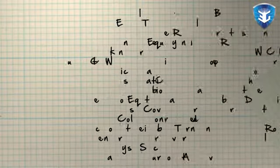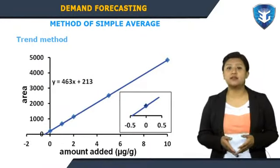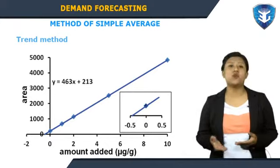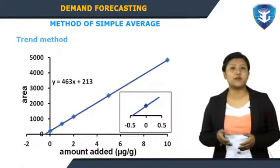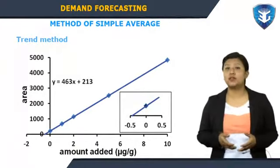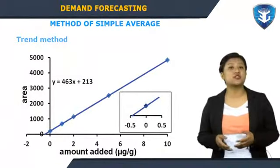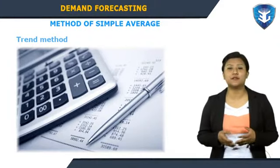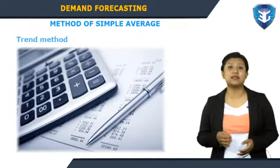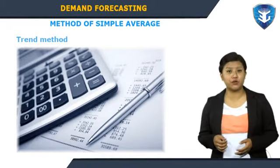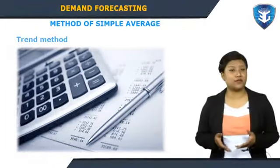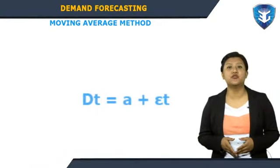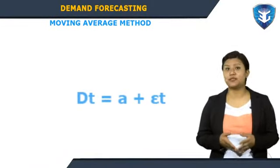Under the trend method, time series data are used to fit a trend line or curve, either graphically or through the statistical method of least squares. The trend line is worked out by fitting a trend equation to the time series data with the aid of an estimation method. The trend equation could take either a linear or any kind of non-linear form. This method does not require formal knowledge of economic theory — it only needs time series data — though its limitation is it assumes the past is repeated in the future.